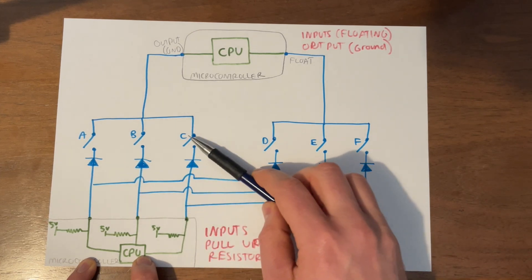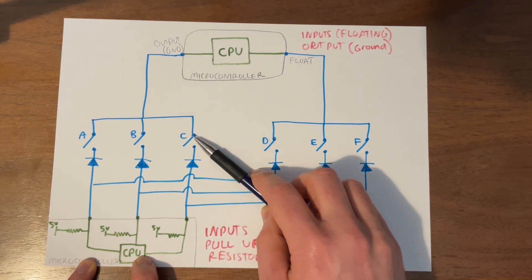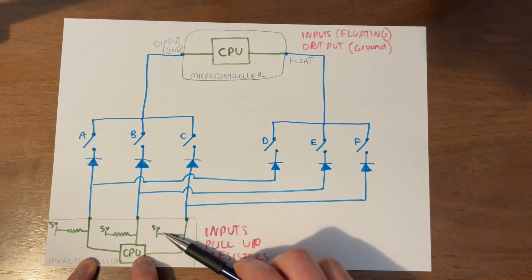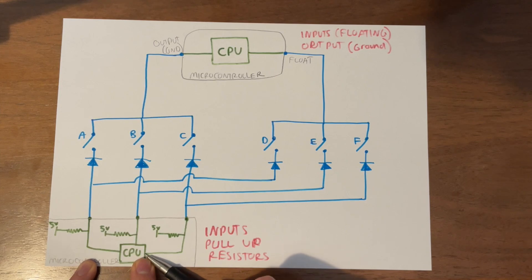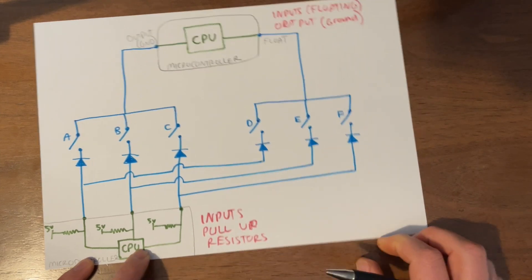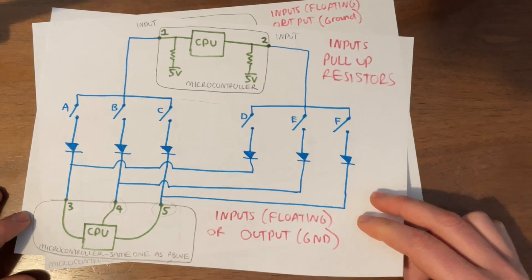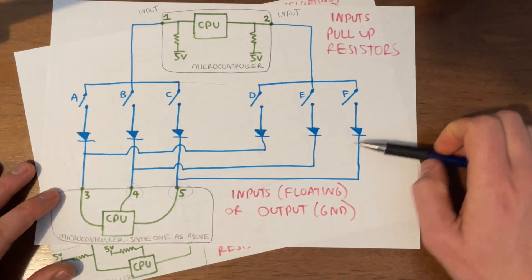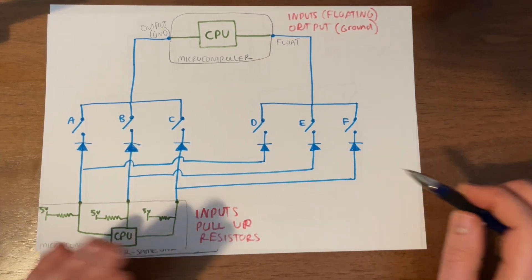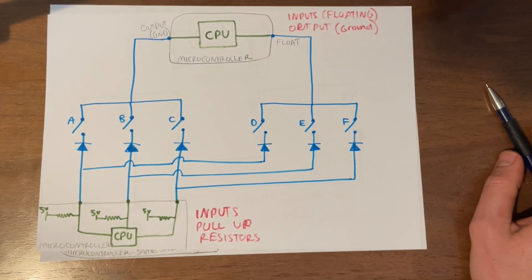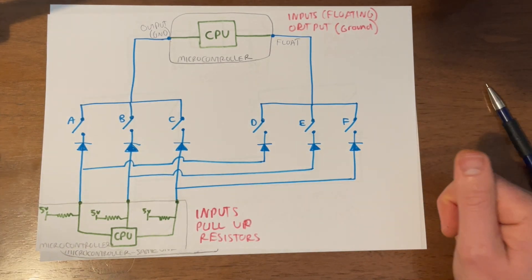So, what if key C is pressed? Well, then the same thing. The current will flow from 5 volts through here, down to ground, and then the voltage will drop across the resistor, and then you'll be able to detect ground instead of 5 volts at the CPU. So, whether you're using this system with the diodes facing this way, or whether you're using this system with the diodes facing up, the same principles apply. It just depends which pins you need to set to which on the microcontroller.